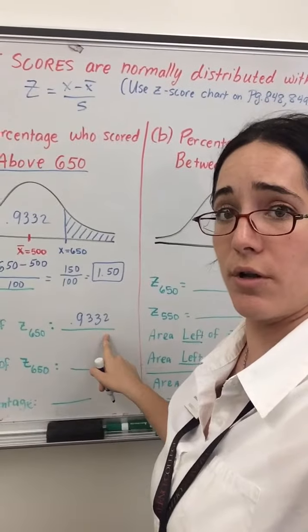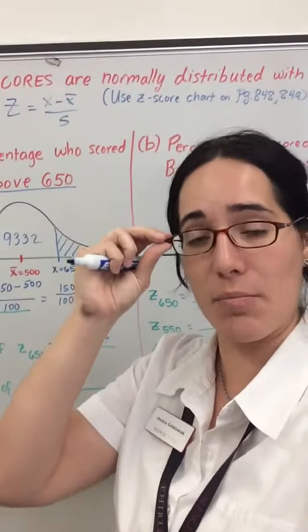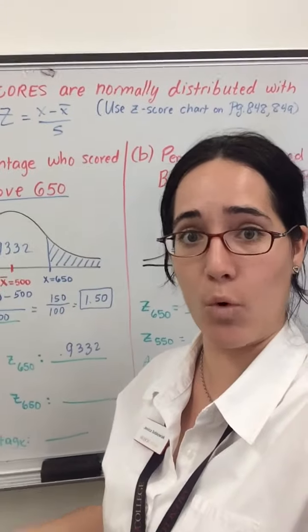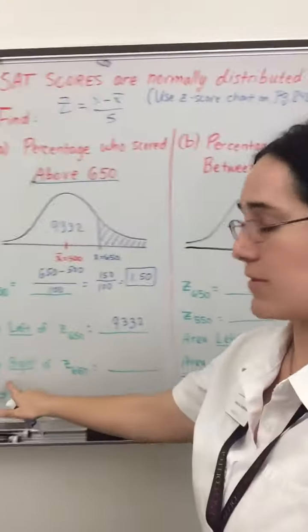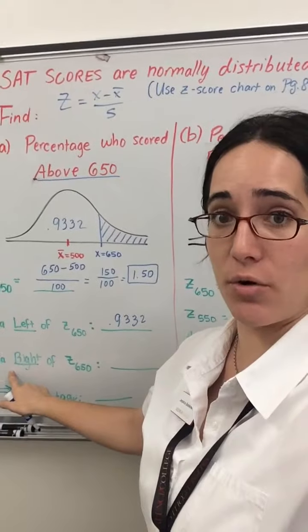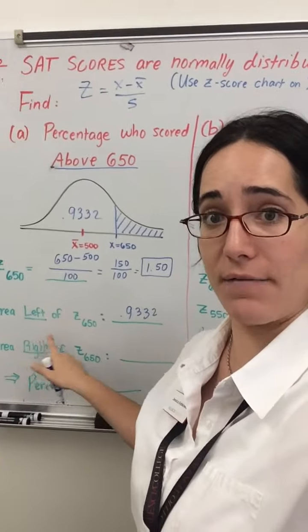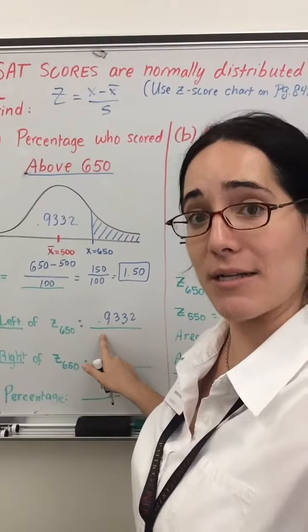But we're asked to find the region above, or to the right of our z-score. Remember, under the bell curve is the entire probability, which is 100%, or 1, if we're talking decimals. So to figure out the area to the right of a z-score, you'll first look up the area to the left of it in the chart, and then subtract it from 1.